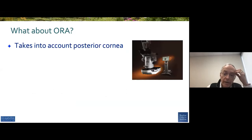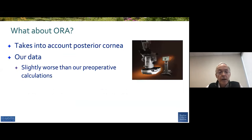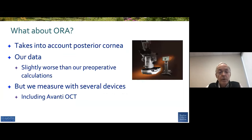Aura has been used, and it does take into account posterior cornea because it's literally performing a refraction on the aphakic eye on the operating room table. Our data actually showed that we did more poorly with Aura than with our preoperative calculations. We do a lot of measuring preoperatively, including the Avante OCT, which has helped us improve our accuracy a bit. So Aura has not been helpful to us, and we've actually stopped using it.